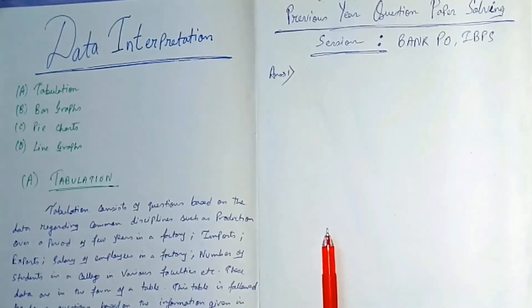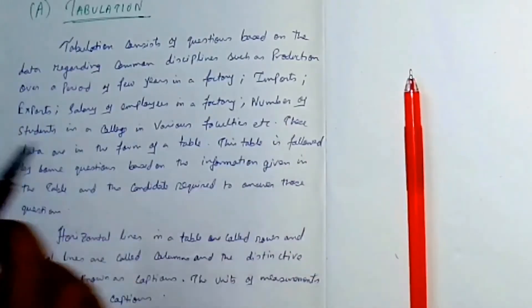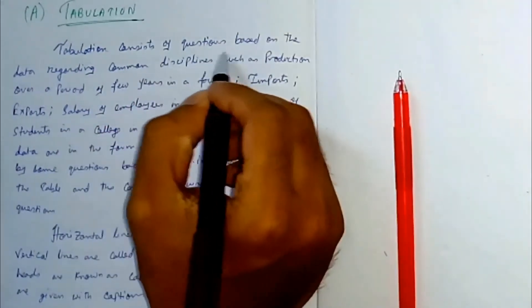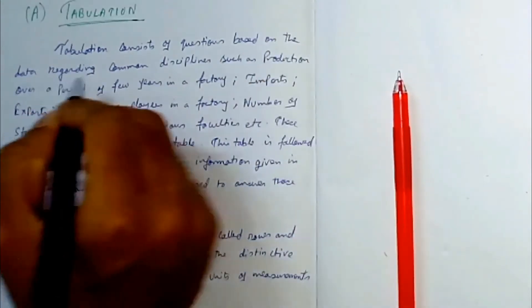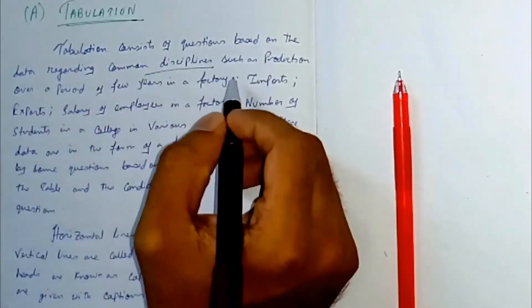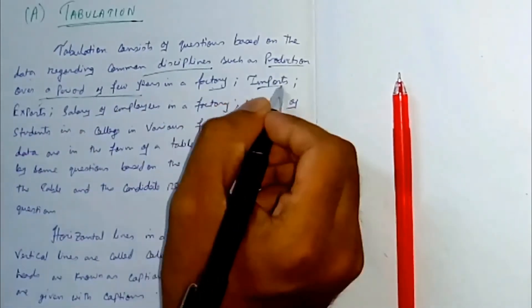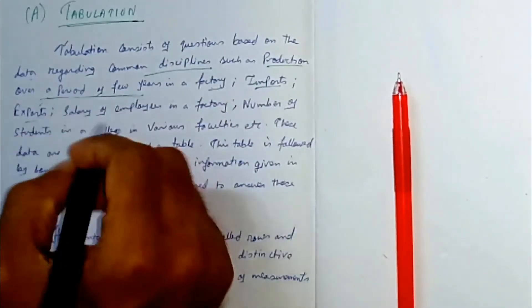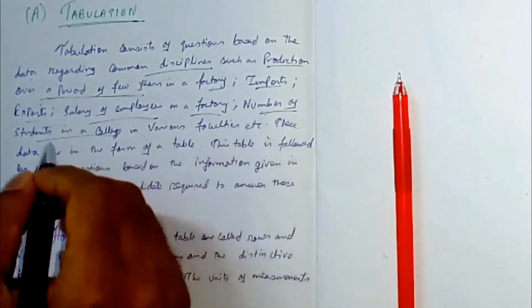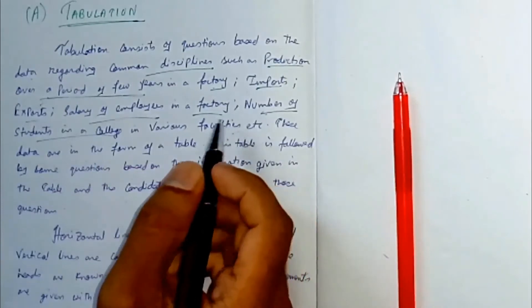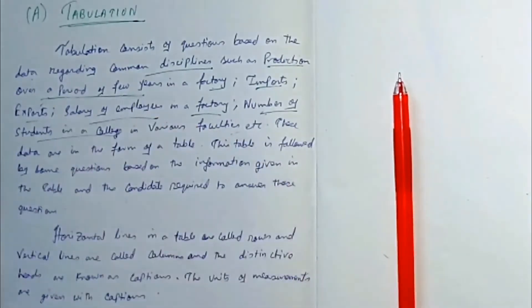Let's begin. Today first we'll discuss tabulation. A tabulation consists of questions based on data regarding common disciplines such as production over a period of years in a factory, imports or exports, salary of employees in a factory, or number of students in a college in various faculties.